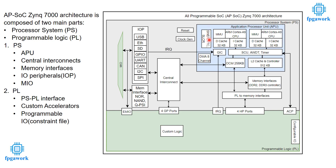We also have other timers: system watchdog timer, triple timer counter, and a system level control register that controls the behavior of the system. I will give detailed explanations when implementing these components in following videos. The central interconnect is mainly a kind of bridge between memory interfaces, IO peripherals, and PS-PL interfaces.